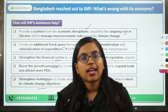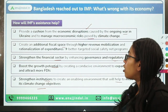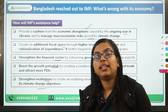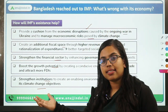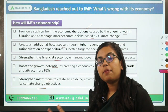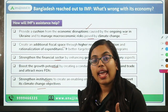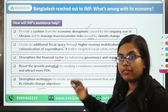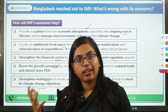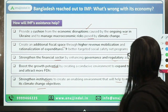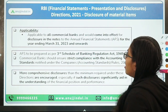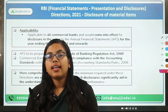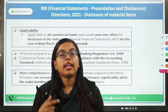IMF assistance will also help boost growth potential by encouraging more exports, creating more demand in the domestic and international economy, and attracting more foreign direct investment into Bangladesh. Finally, IMF will help Bangladesh strengthen its institutions to create an enabling and conducive environment to meet its climate change objectives. Climate change has also severely affected macroeconomic stability in Bangladesh. If they work on their climate change objectives, they can move from being a least developing economy to a middle income economy.